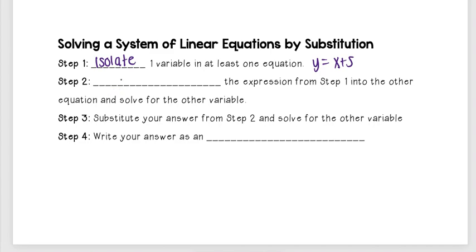Step two, we're going to substitute the expression from step one into the other equation and solve for the other variable. So what I mean by that, let's say that I had the equation 2x plus 3y equals 4. Well, I know y is equal to x plus 5. So I can substitute that in for y. So I get 2x plus 3 times that x plus 5 now.